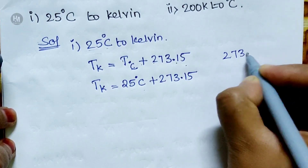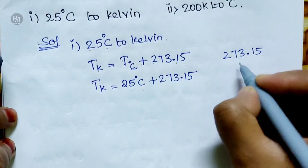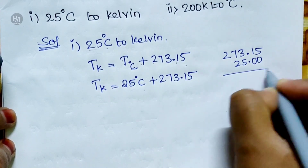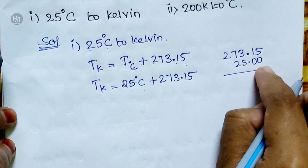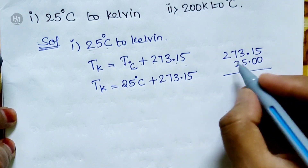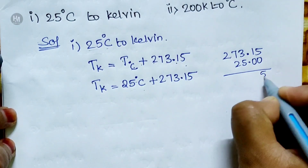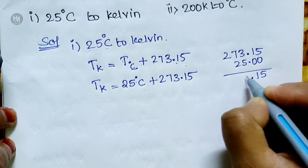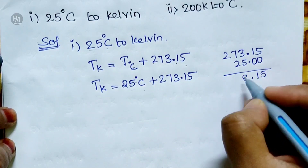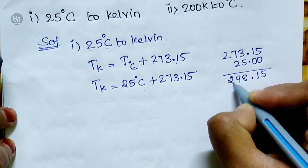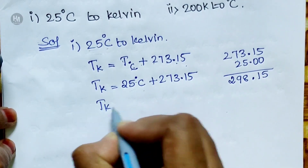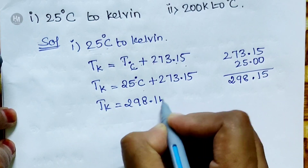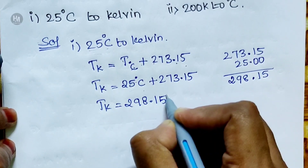Now we calculate: 25.00 plus 273.15. Adding step by step: 5 plus 0 is 5, 1 plus 0 is 1, 7 plus 8 gives 298.15. So TK is equal to 298.15 Kelvin.